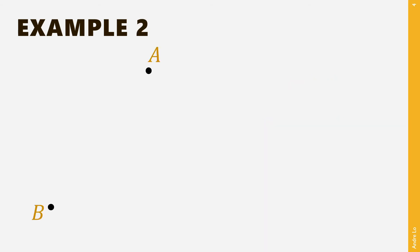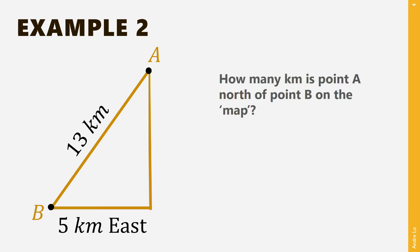Now, in example 2, we have an imaginary map with two points on it, A and B. We are told that the distance between the two points is 13km. We are also told that point A is 5km east of point B. What we want to find out is how many kilometers north point A is from point B.